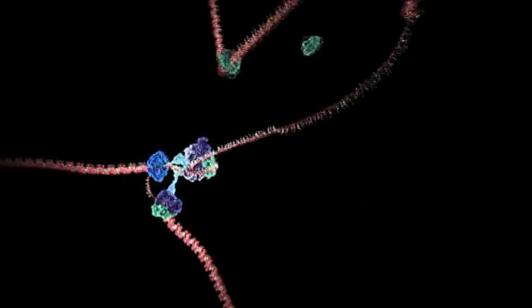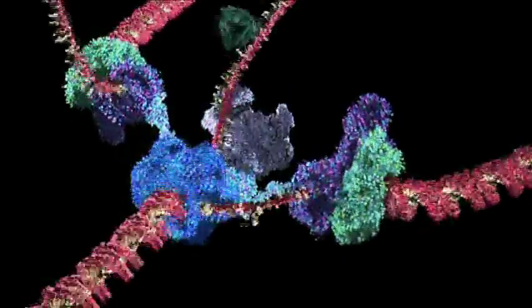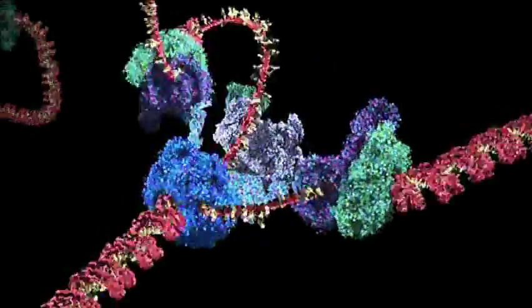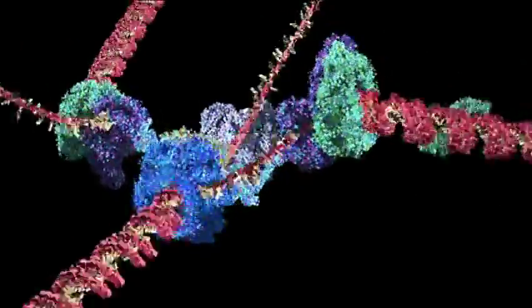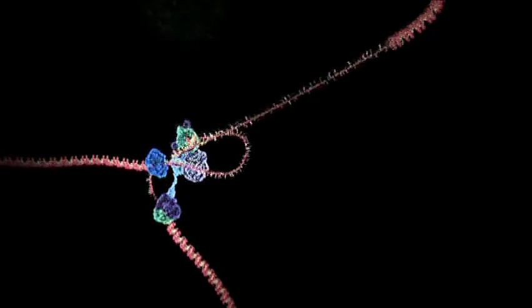One strand is copied continuously and can be seen spooling off to the right. Things are not so simple for the other strand because it must be copied backwards. It is drawn out repeatedly in loops and copied one section at a time.